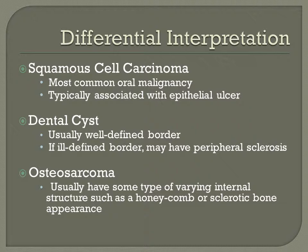The next most likely differential interpretation is osteosarcoma. Osteosarcoma is the most common primary malignant bone tumor of the head and neck. Both fibrosarcoma and osteosarcoma may show enlargement of affected bone as well as ill-defined borders and complete internal radiolucency. However, osteosarcomas usually have some type of varying internal structure, such as a honeycomb or sclerotic bone appearance. An osteosarcoma without this internal structure may be indistinguishable from fibrosarcoma radiographically; because of this, a biopsy is needed to definitively exclude osteosarcoma from the differential list.